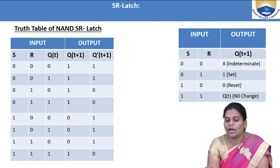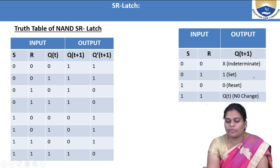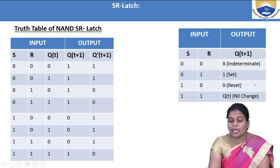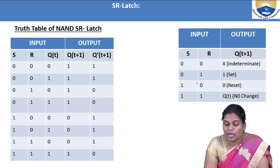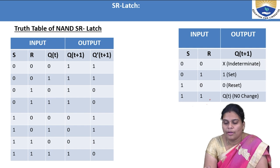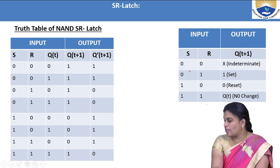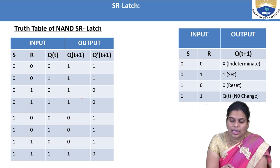The characteristic table for the NAND SR latch: when S=0, R=0 — indeterminate state. When S=0, R=1 — set (Q=1). When S=1, R=0 — reset (Q=0). When S=1, R=1 — no change, Q(t+1)=Q(t). Note that for NAND-based SR latch, the set/reset conditions are swapped compared to the NOR-based SR latch.